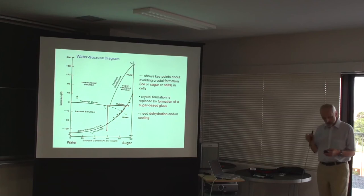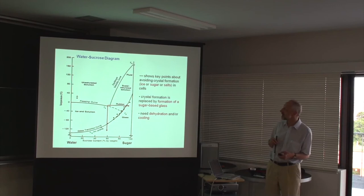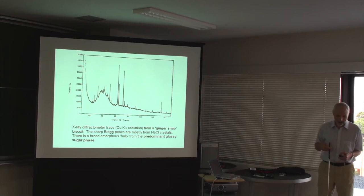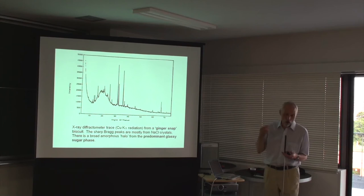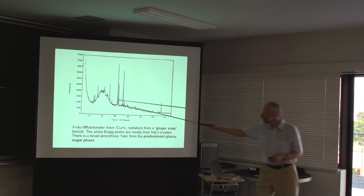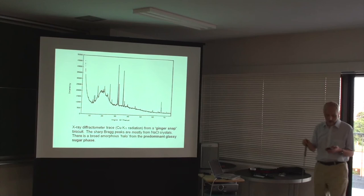Interestingly, glasses feature prominently in things you eat. This is an English type of cookie or biscuit. But it's true of any confectionery, sugary confectionery that is hard, almost always has the sugar as a glassy phase, not a crystalline phase. And this is the diffraction pattern of the glass. And these sharp peaks are usually NaCl.